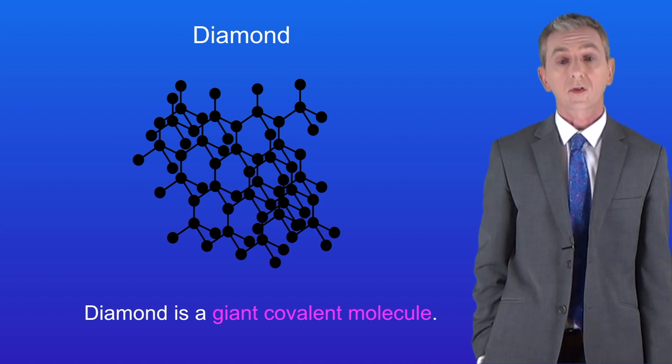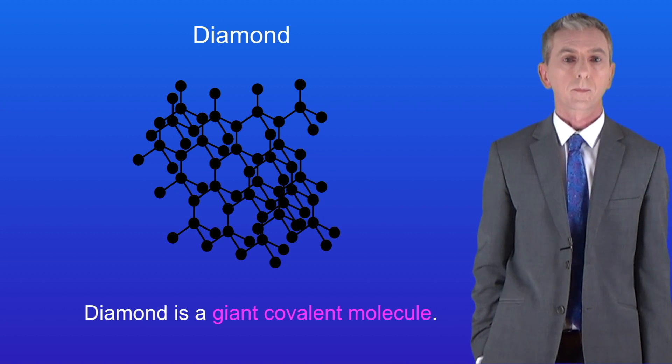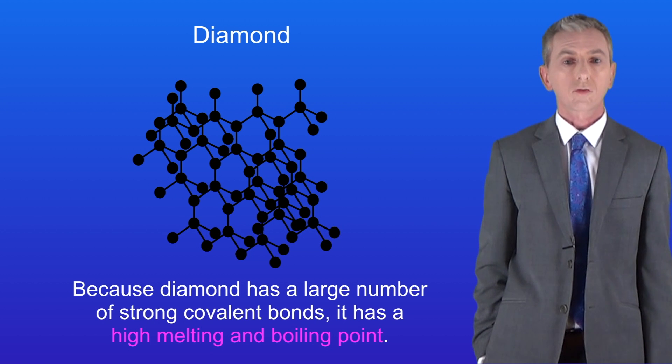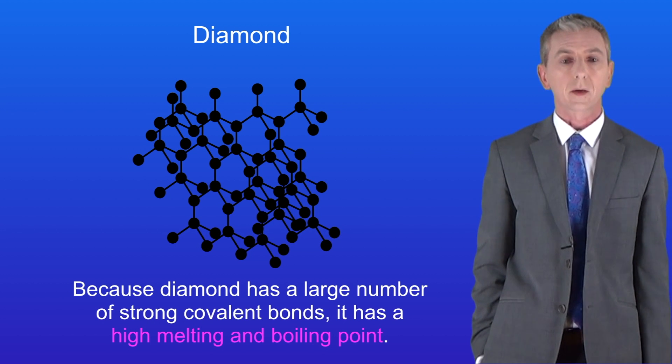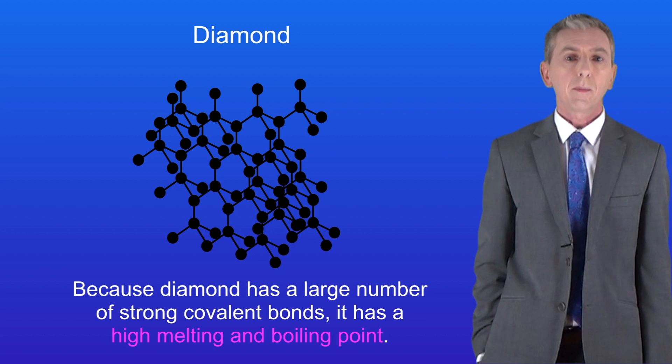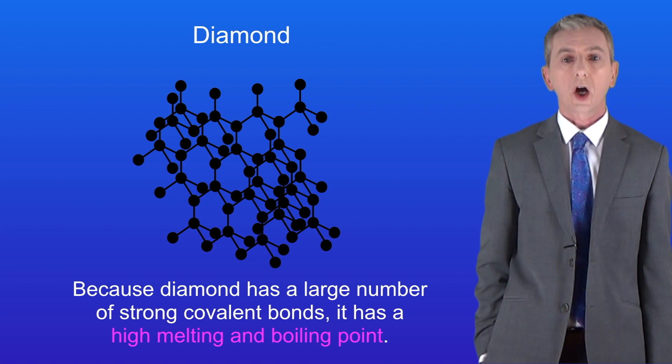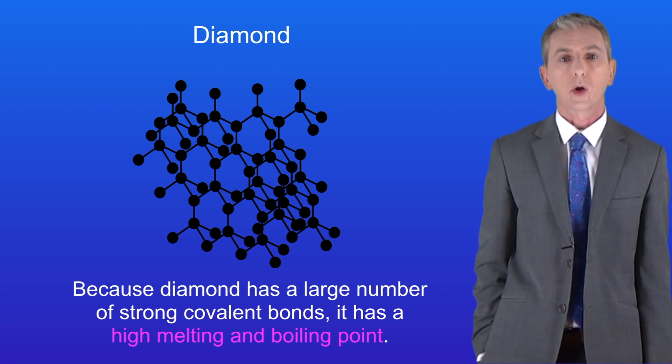In the last video we looked at diamond which is a giant covalent molecule. Because diamond has a large number of strong covalent bonds it's got a high melting and boiling point. Remember that diamonds form from the element carbon and each carbon atom forms four covalent bonds.